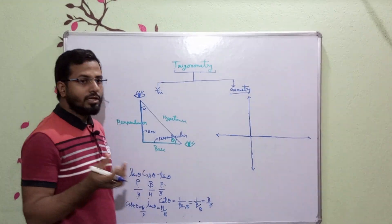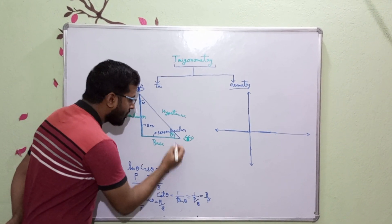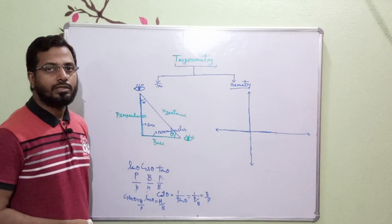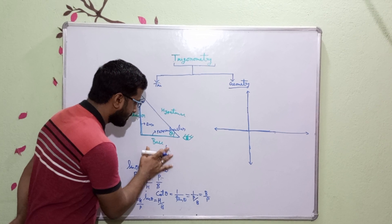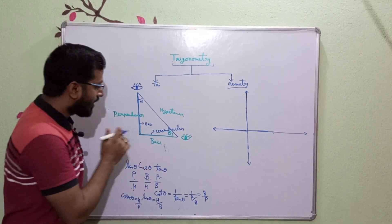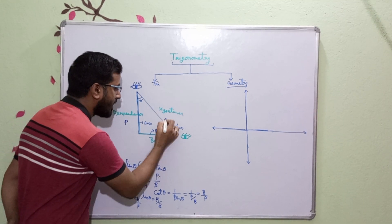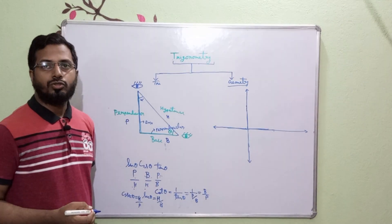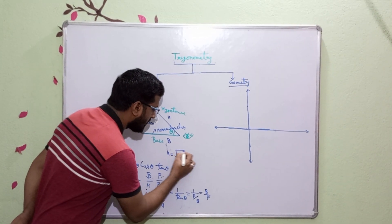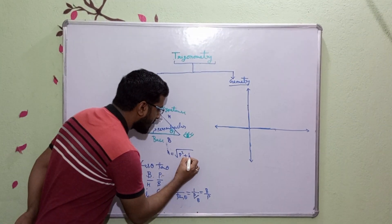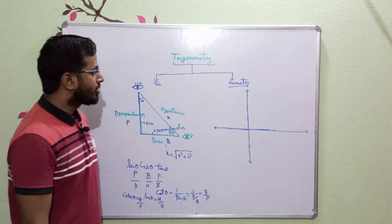One important topic: according to the Pythagoras theorem, you should know the value of the hypotenuse. Suppose this is the perpendicular, this is the base, and this is the hypotenuse. The hypotenuse is equal to the square root of P squared plus B squared, according to the Pythagoras theorem.